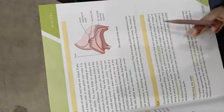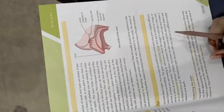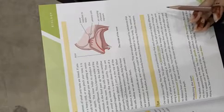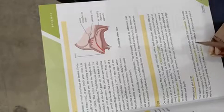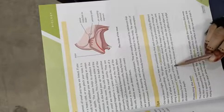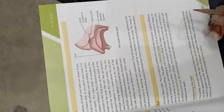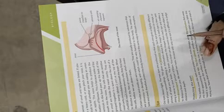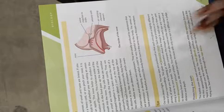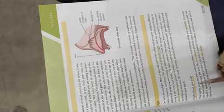Binocular vision means the two eyes are positioned in such a way that each one gives a slightly different view of your surroundings. The eye produces an image or picture of what you're looking at, and this information is then sent to the brain. The brain creates a three-dimensional picture and works out the size of an object and the distance from you. We need two eyes because with only one eye it would be difficult to judge distance and depth.